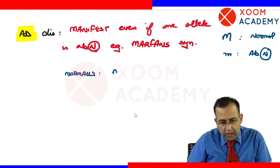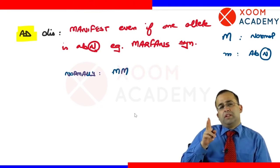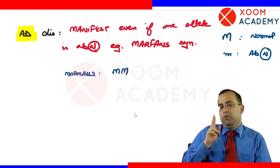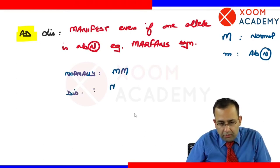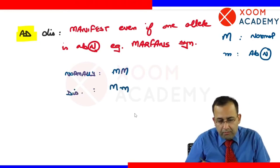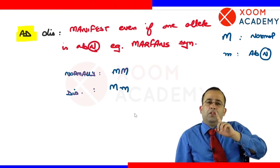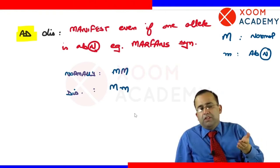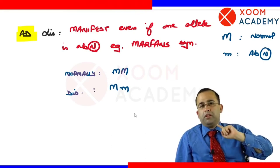Normally we are MM — two normal alleles. Versus a diseased person who will be Mm. Even if one allele is abnormal, it manifests with the disease. So, autosomal dominant disorders manifest even if one allele is abnormal.